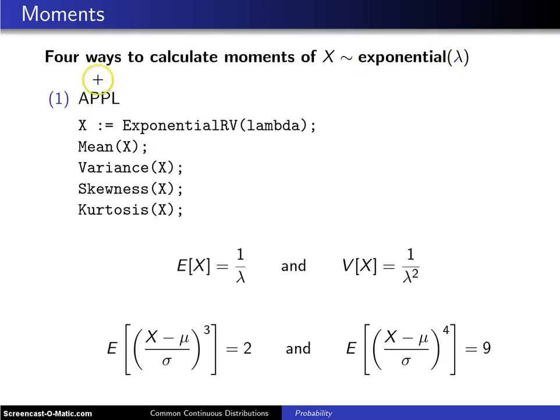The first way is to use APPL. You can set x to an exponential random variable with parameter lambda, and internal to the exponential RV routine it will assume that lambda is a positive value. If you then type mean of x, variance of x, skewness of x, and kurtosis of x,